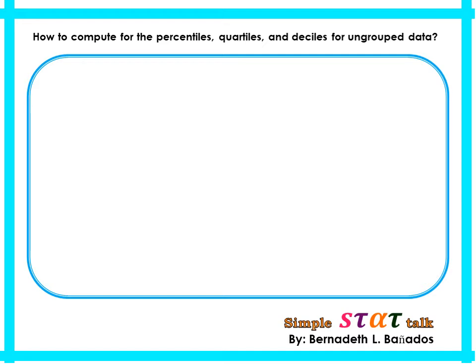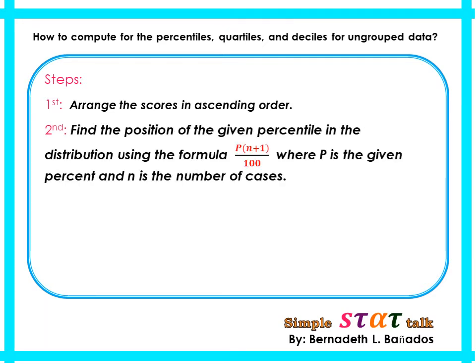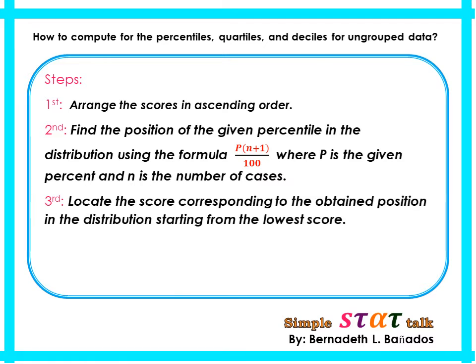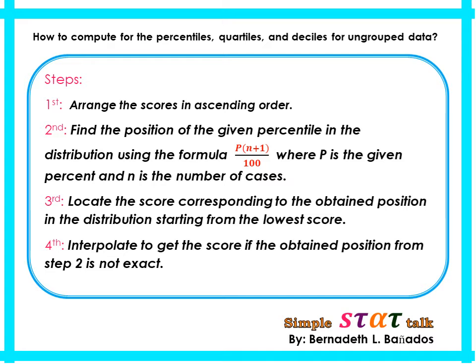Now let us focus on how to compute percentiles, quartiles, and deciles for ungrouped data. First, arrange the scores in ascending order, from lowest to highest. Second, find the position of the given percentile using the formula: P multiplied by (N plus 1), divided by 100, where P is the given percentile and N is the number of cases. Third, locate the score corresponding to that position. Fourth, interpolate to get the score if the position obtained is not a whole number — that is, if it has decimal places.